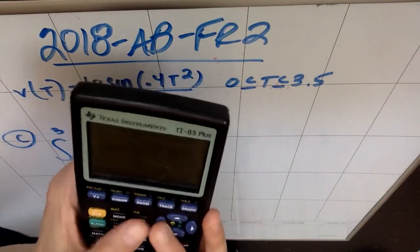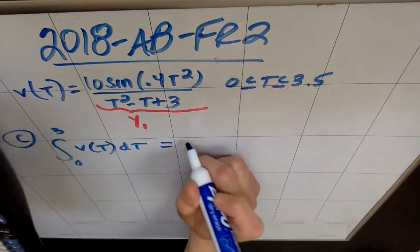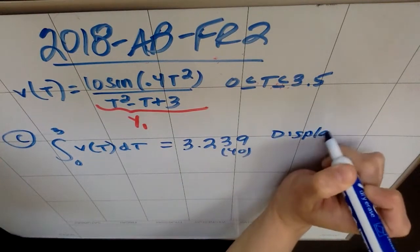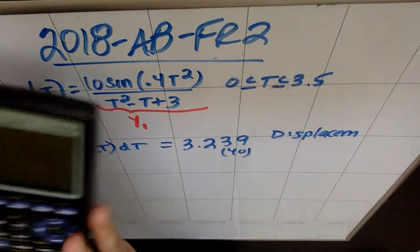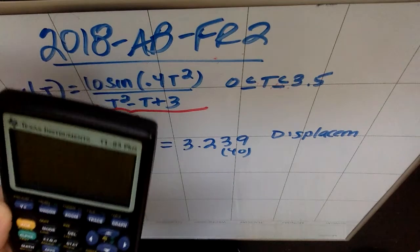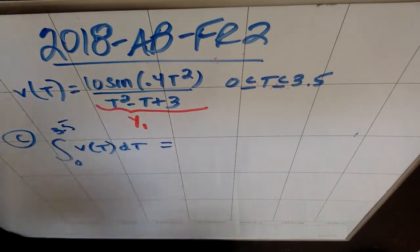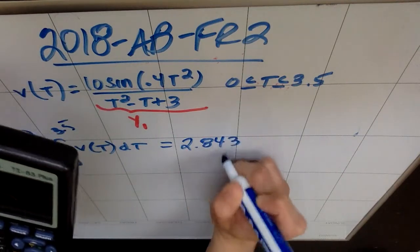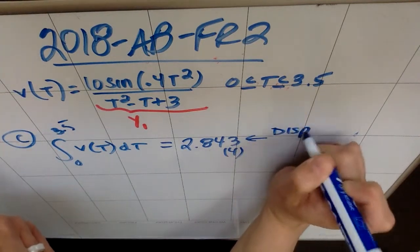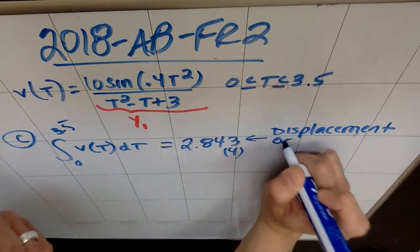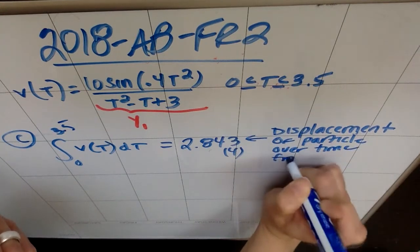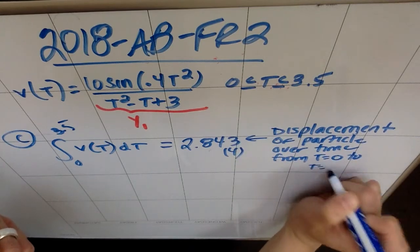I do that, and I get 3.239, or 3.240. And this is the displacement. Oh, I'm sorry, they said 3.5. My bad. I take it back. Second enter, 3.5. My bad. Oops, attention to detail. Mea culpa. So 3.5. And I get 2.843, or 2.844, depending on if you round or truncate. So this is the displacement of the particle over the time from t equals 0 to t equals 3.5.